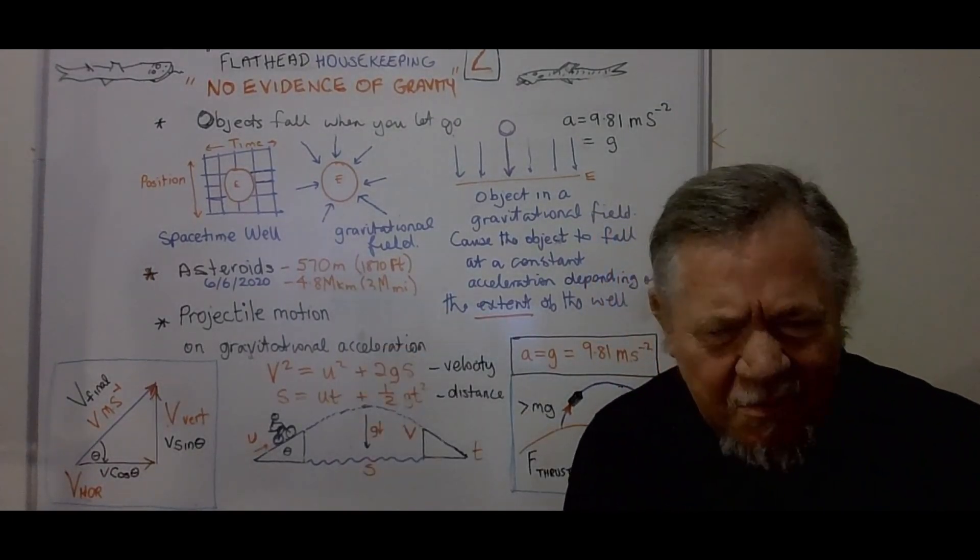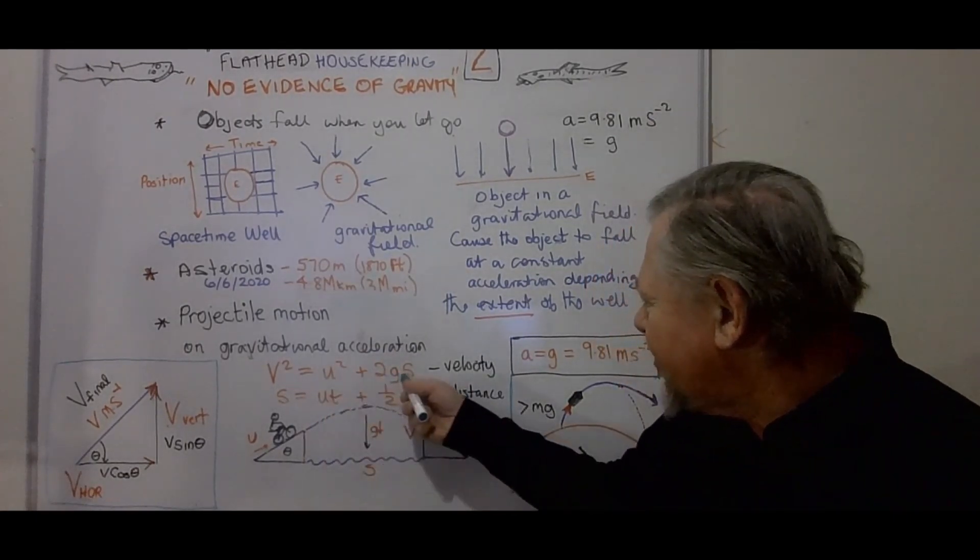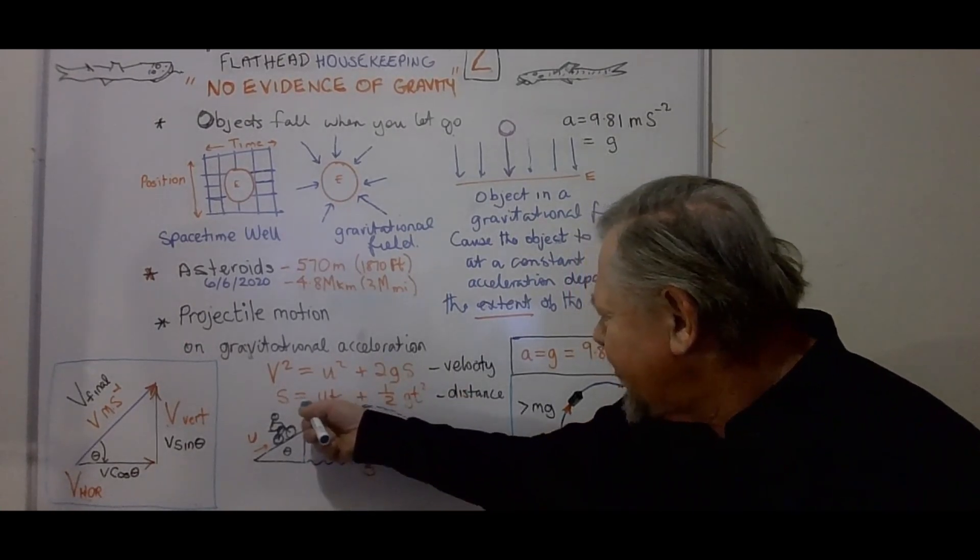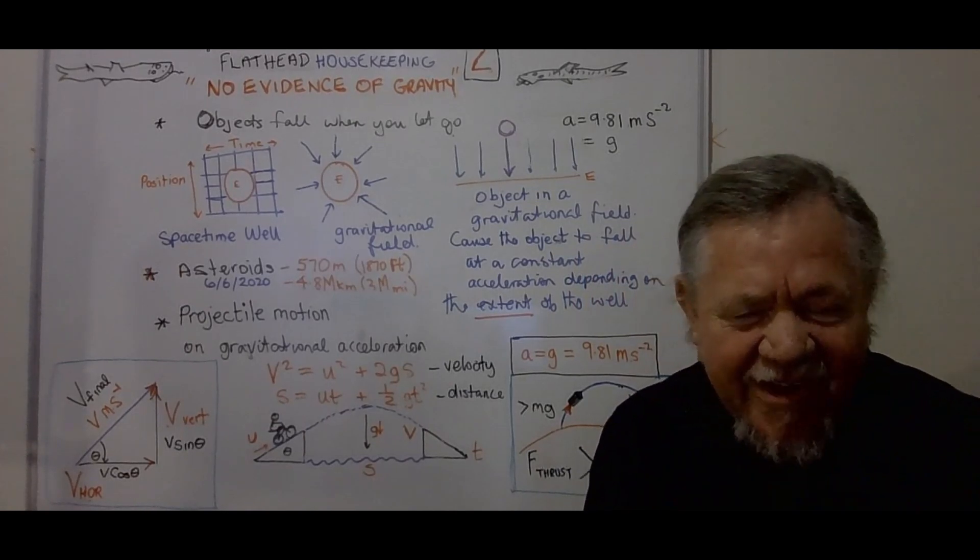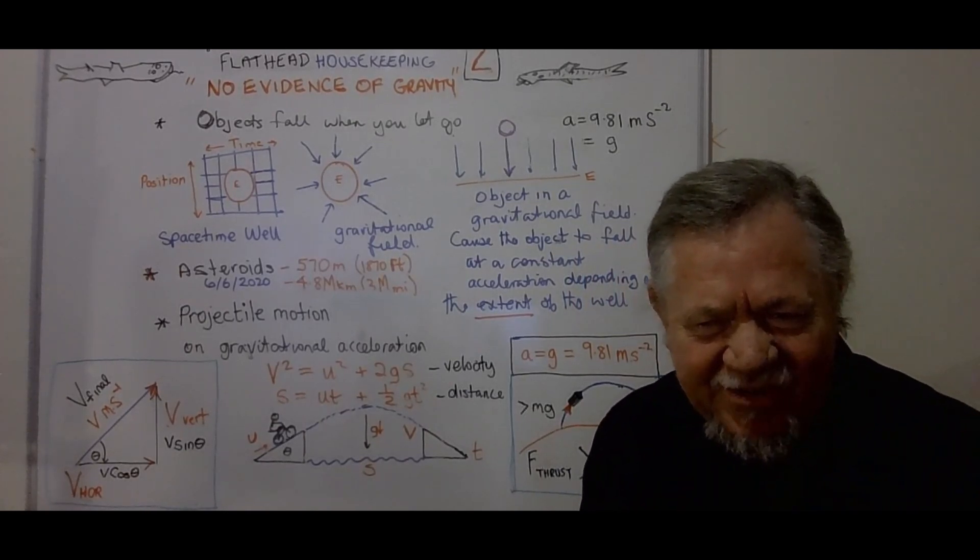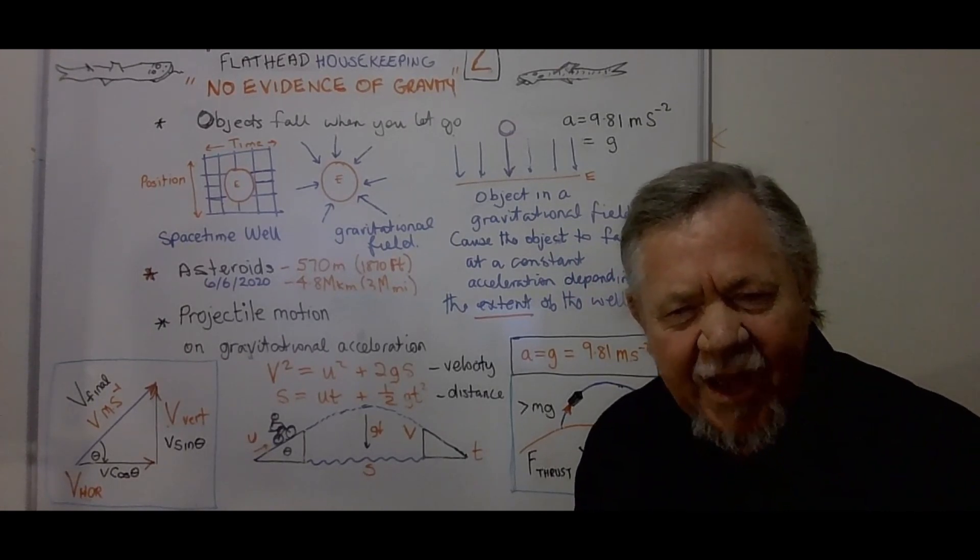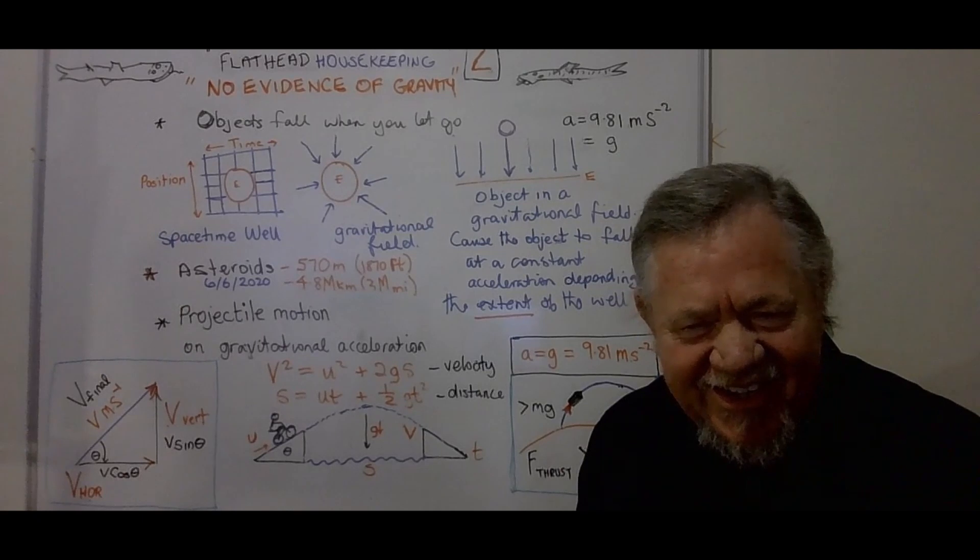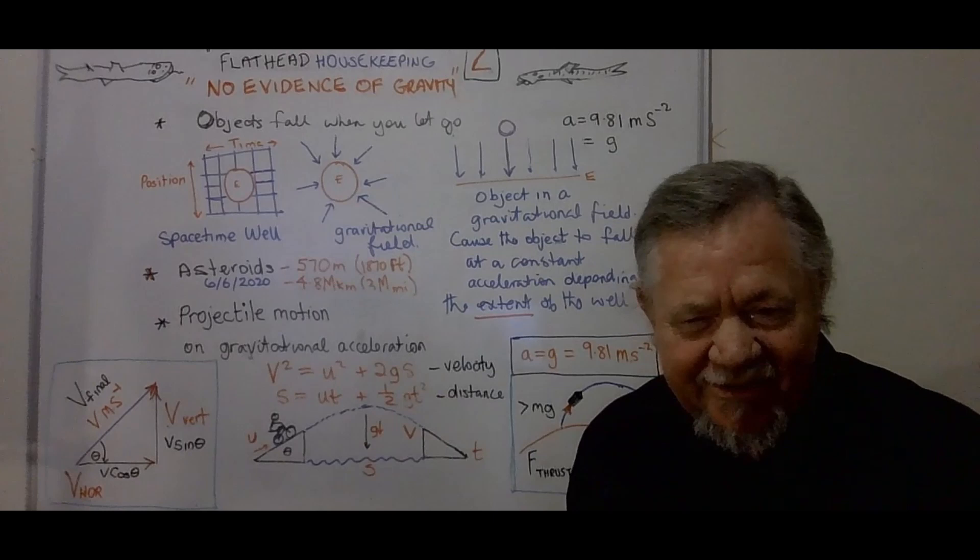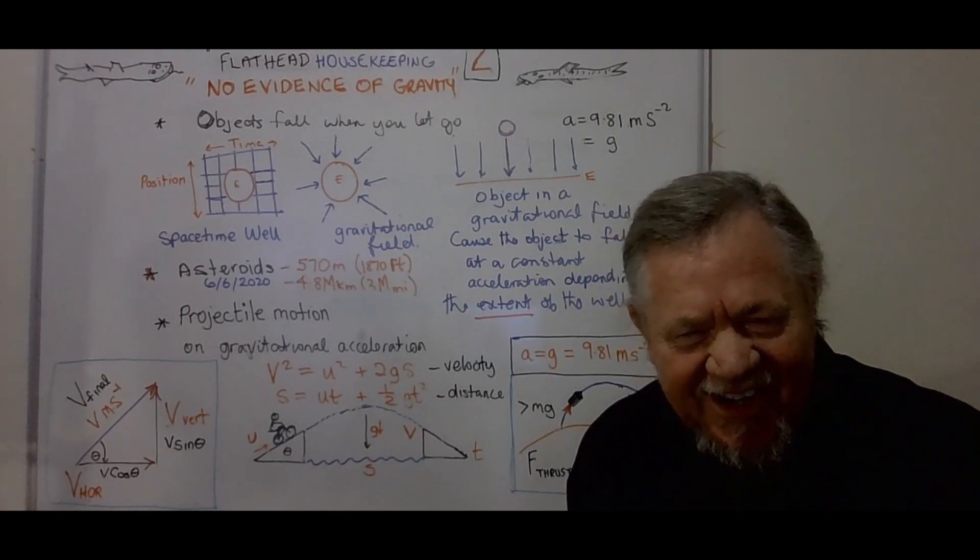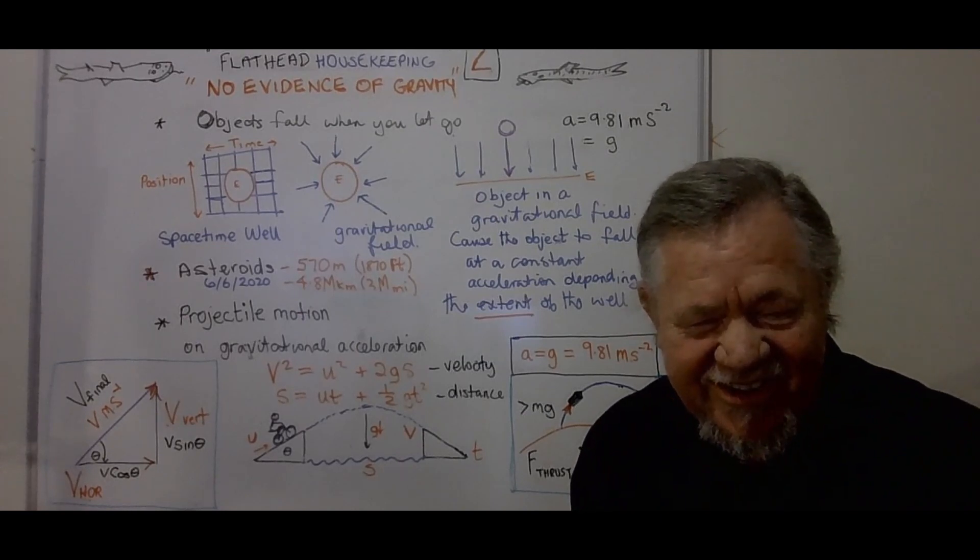All right another one. Projectile motion. Well these two formulas were actually produced by Newton. V squared equals U squared plus 2GS and S being the distance is equal to UT plus half AT squared. Because everything that you throw, every projectile, forms a parabolic path. And have a look at this. It's described right here in half GT squared. How do you, on your flat earth math, describe the path of a projectile?